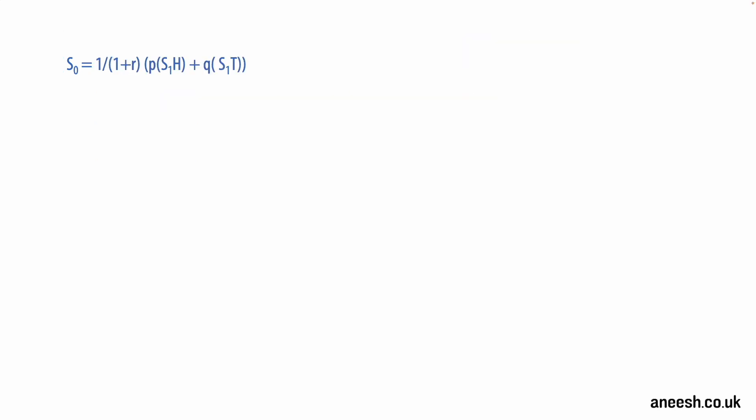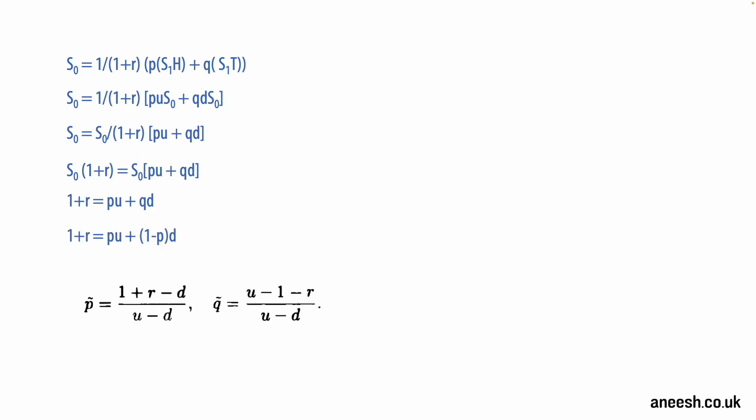Now before we solve for delta, we can also derive the probabilities of p and q from the up and down factor with interest rate. We've already seen our formula for X0 assuming that S0 is equal to that left-hand side of the squared brackets of 1/(1+r) multiplied by p·S1(H) plus q·S1(T). We can change S1(H) and S1(T) with respect to S0 by simply multiplying S0 by the up and down factor of heads and tails respectively. Next I'll take S0 out of the squared brackets and place it as a numerator. We can multiply both sides by (1+r). Now we can divide both sides by S0, and given that q is equal to (1-p), we can now solve for p and q, leaving the two equations of 1.1.8.